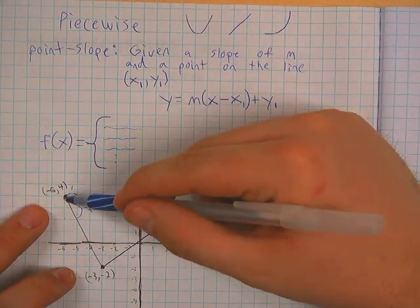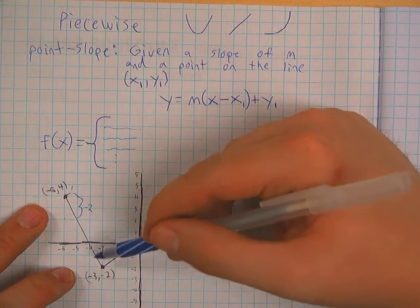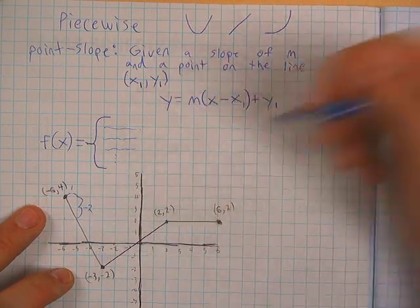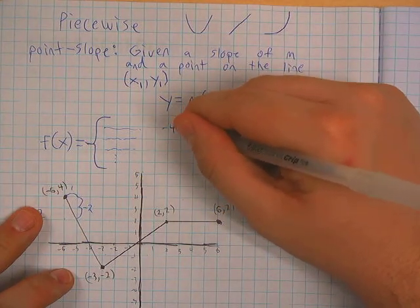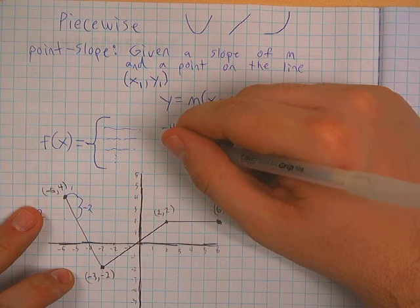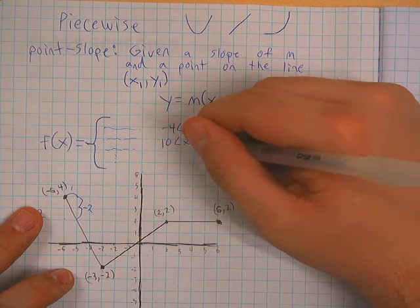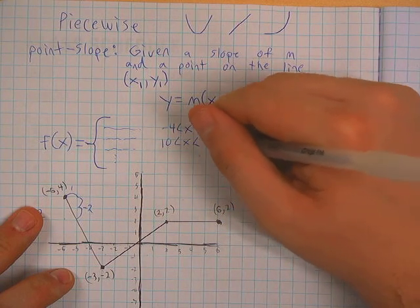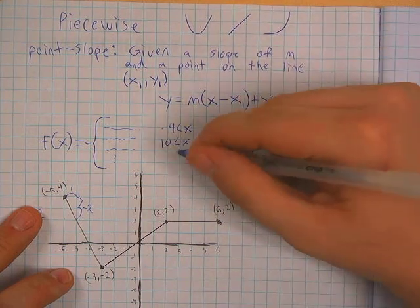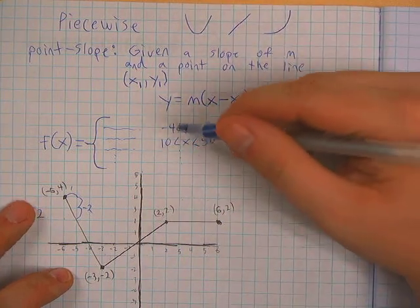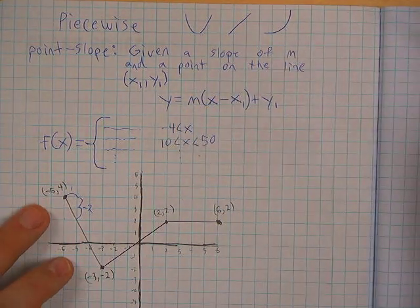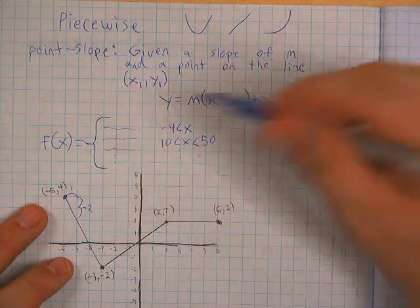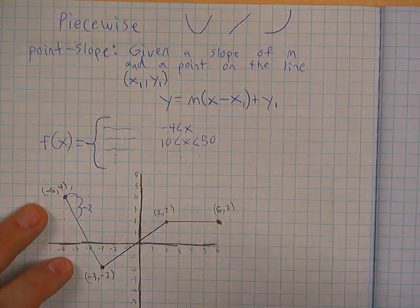You'll also list the domains of your function — in other words, where each equation controls your graph. These are listed as inequalities, so maybe negative 4 is less than x, or 10 is less than x which is less than 50, and so on. There are lots of different ways these can be written, and you'll see an example of that here in just a bit.